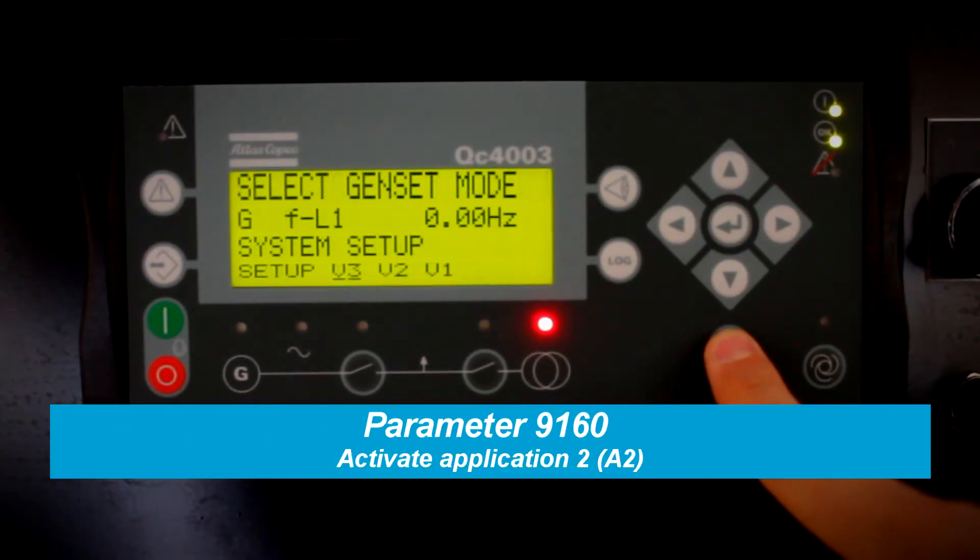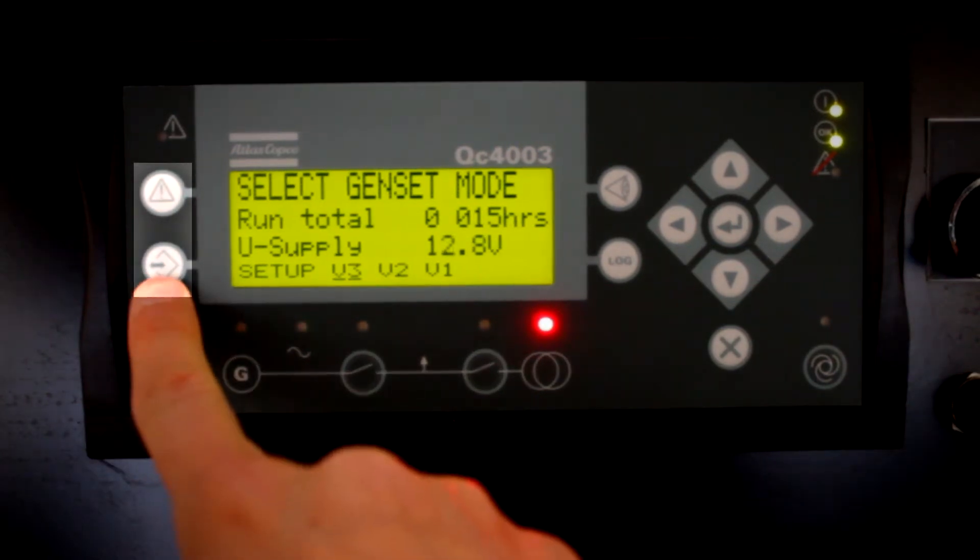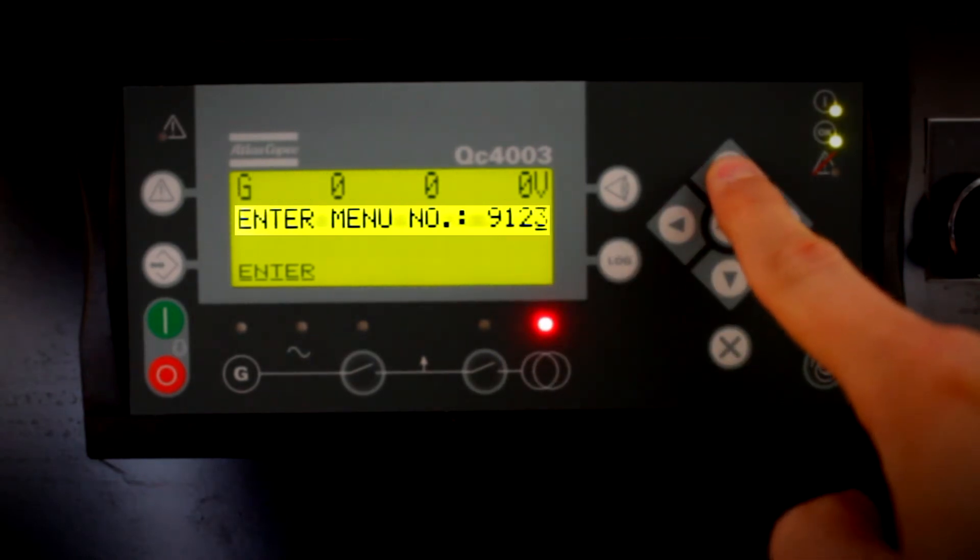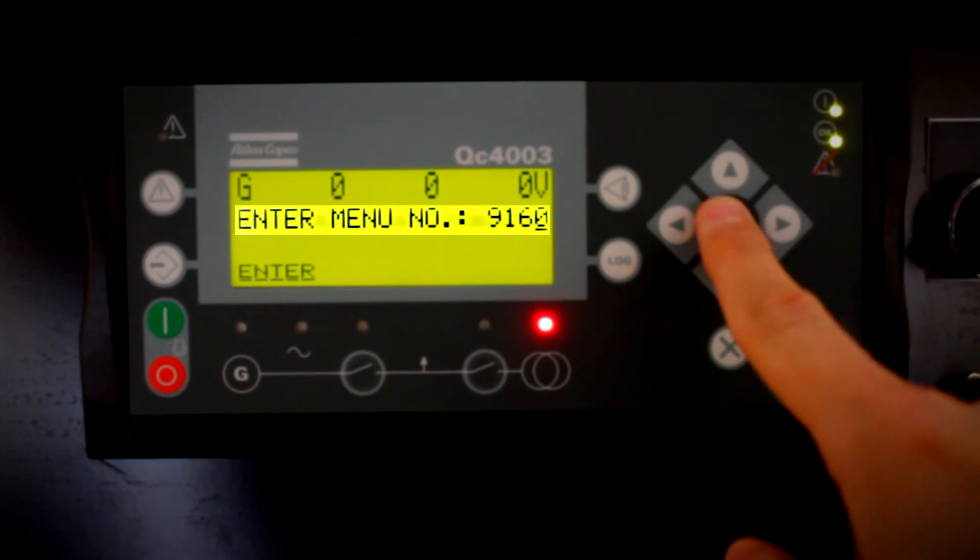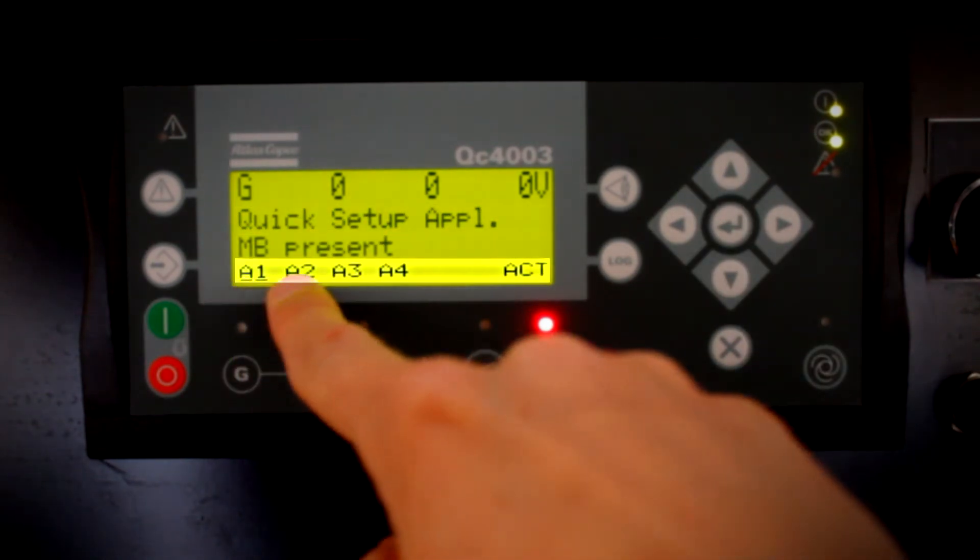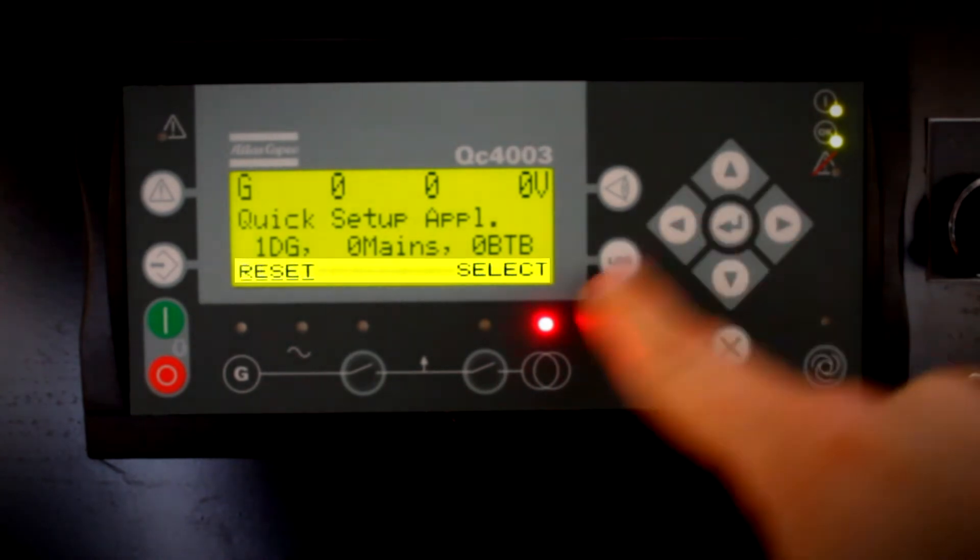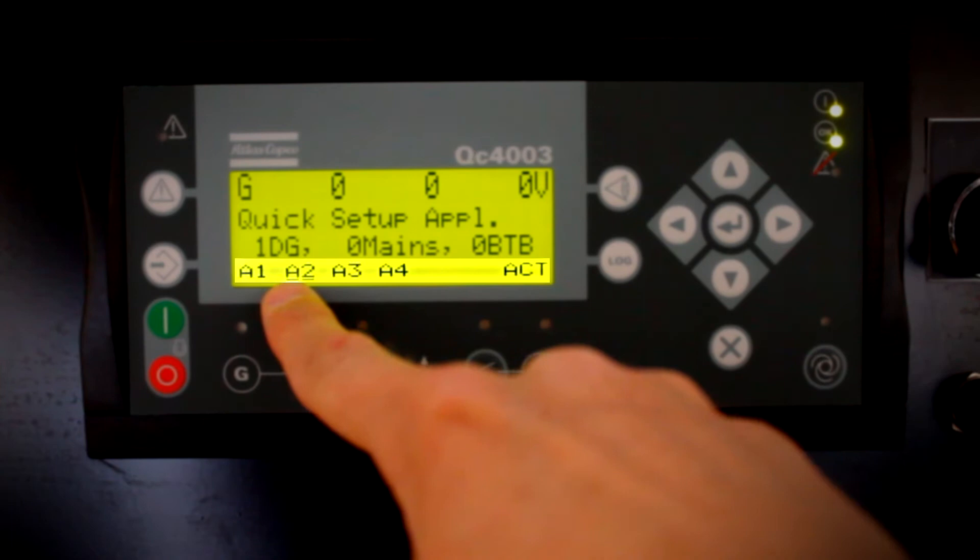Now you should activate Application 2 by pressing Jump button and scroll and select parameter 9160 on the screen. Go to A2 and activate it. Only one final step.